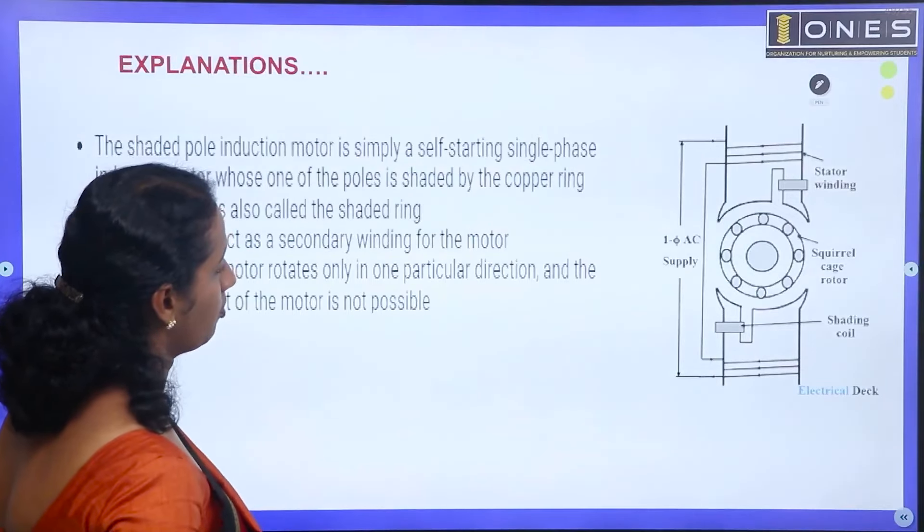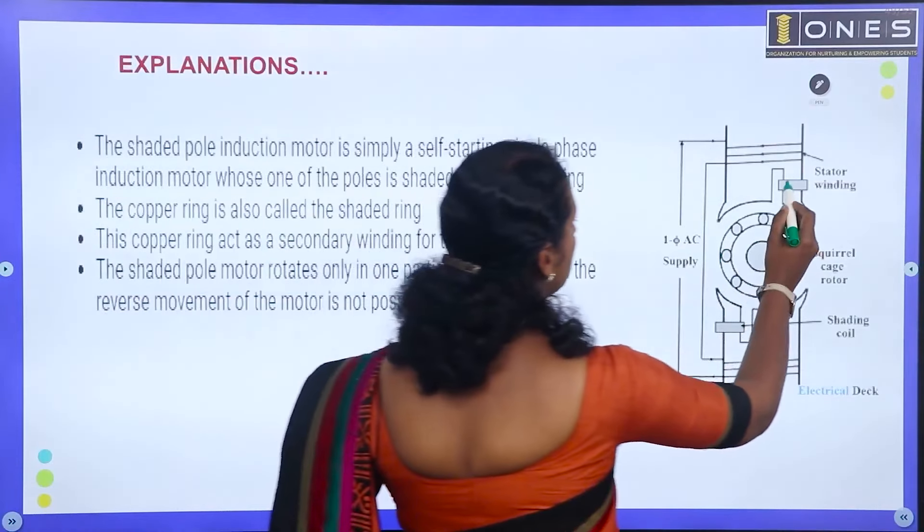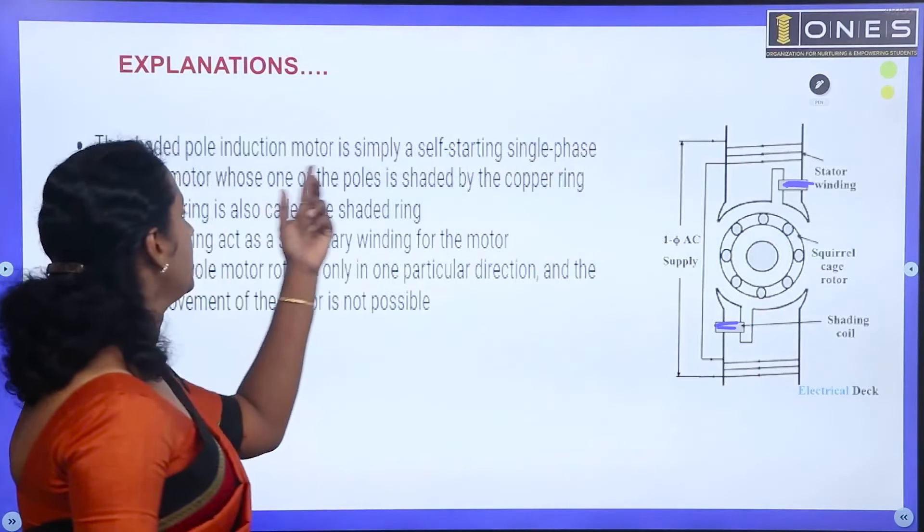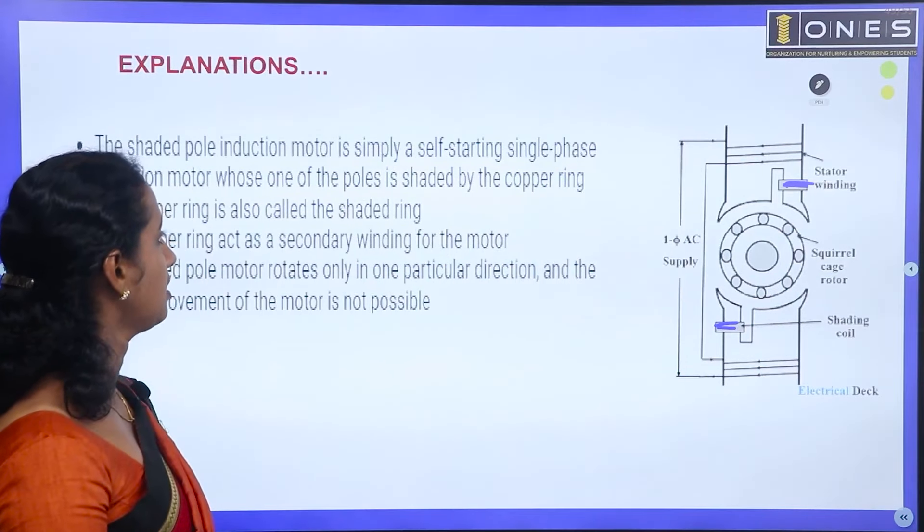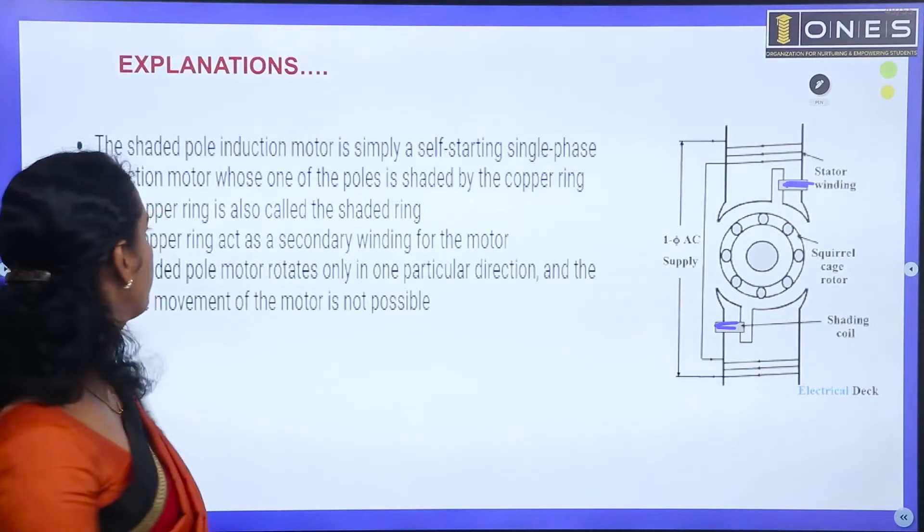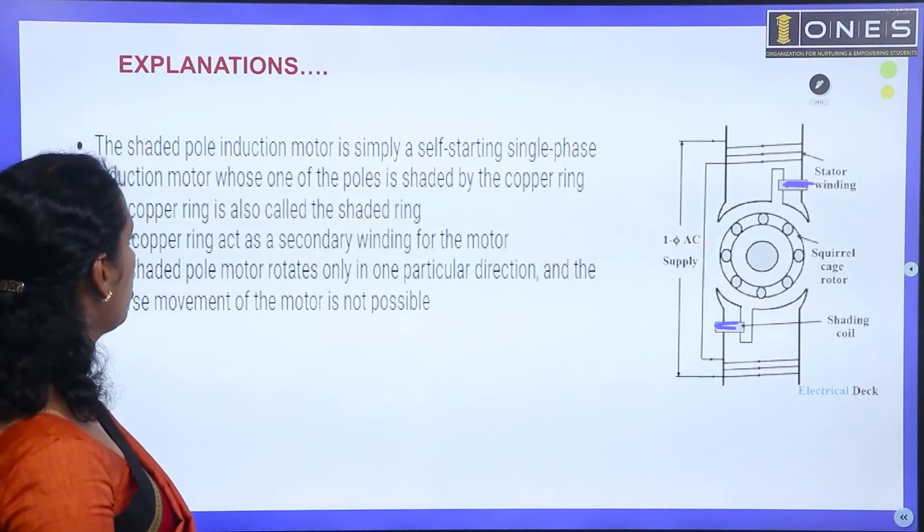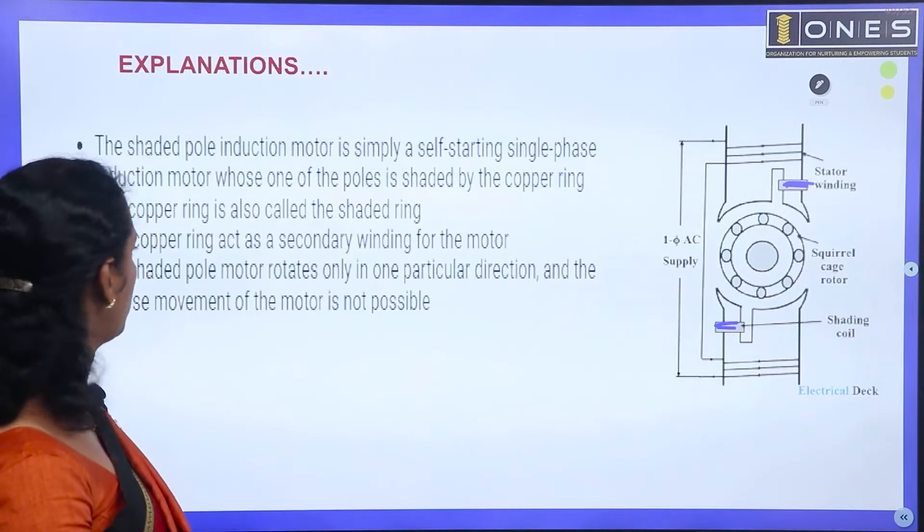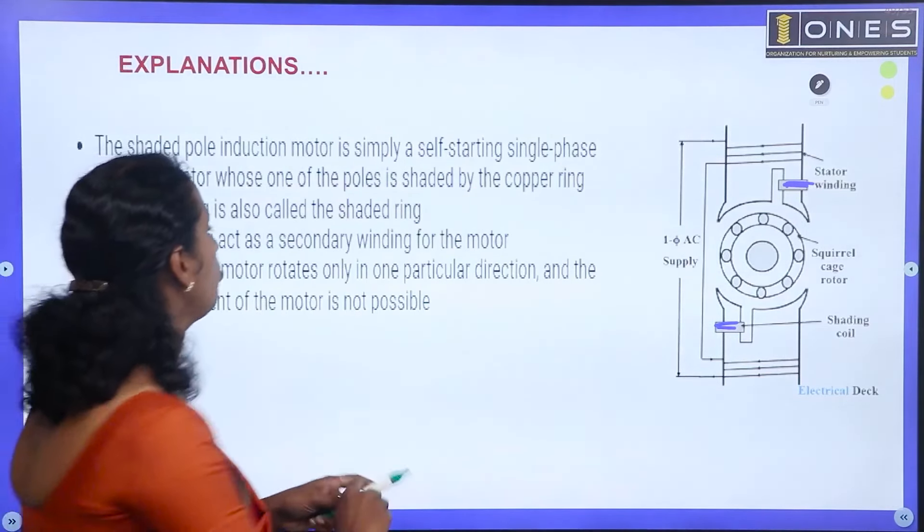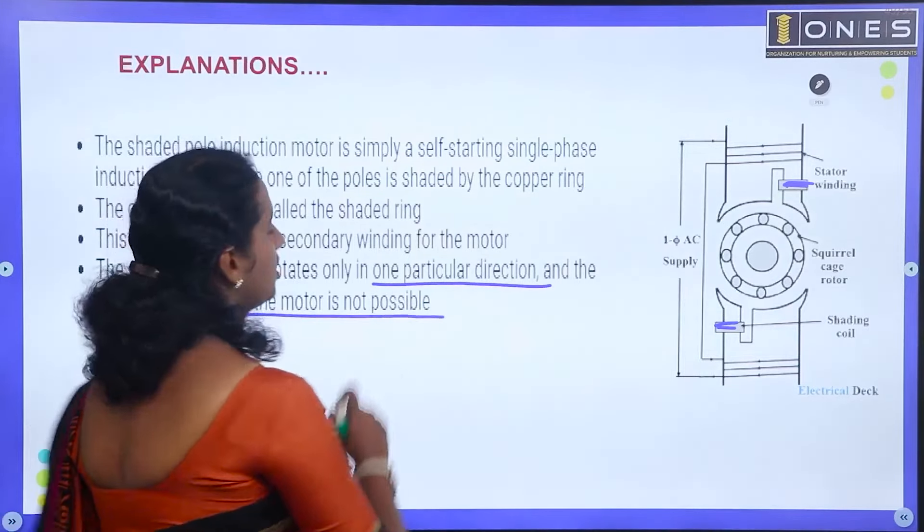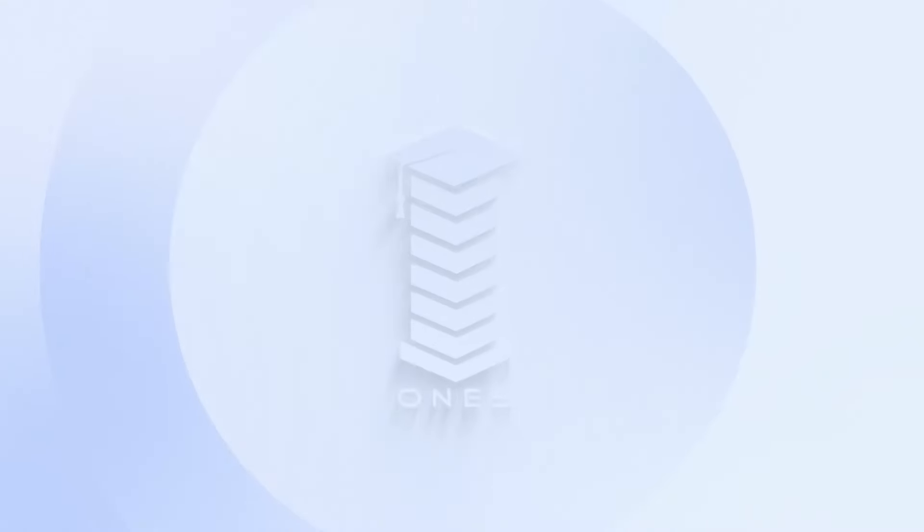And look at this. This is a shaded pole motor. You can see a band here, a copper band. The shaded pole induction motor is simply a self-starting single phase induction motor whose one of the poles is shaded by a copper ring. The copper ring is also called the shade ring. The copper ring acts as the secondary winding of the motor. The shaded pole motor rotates only in one particular direction, and the reverse movement of the motor is not possible.